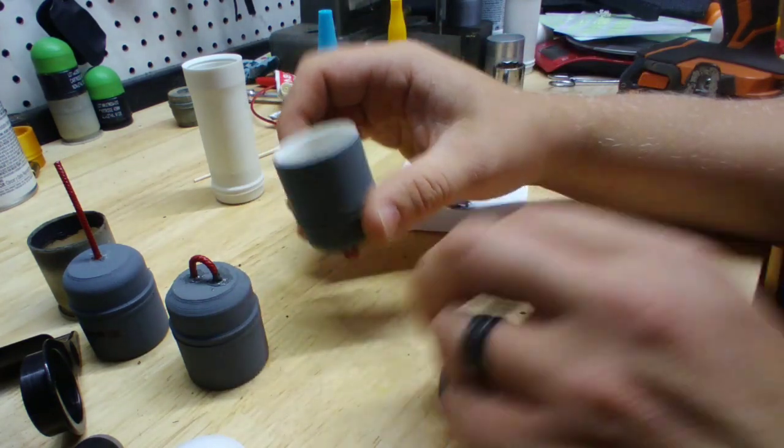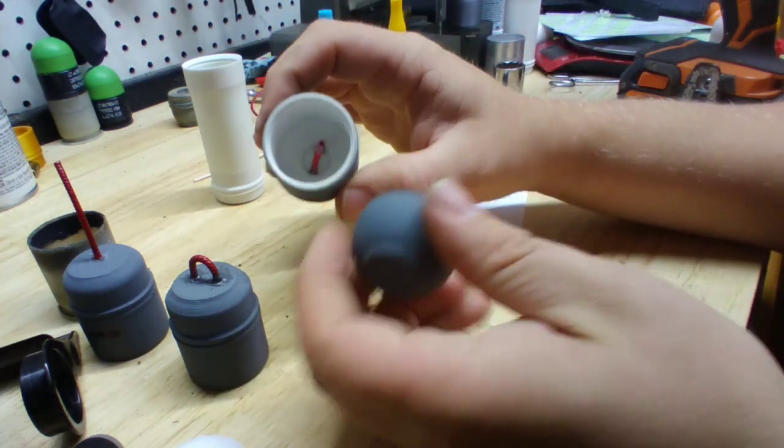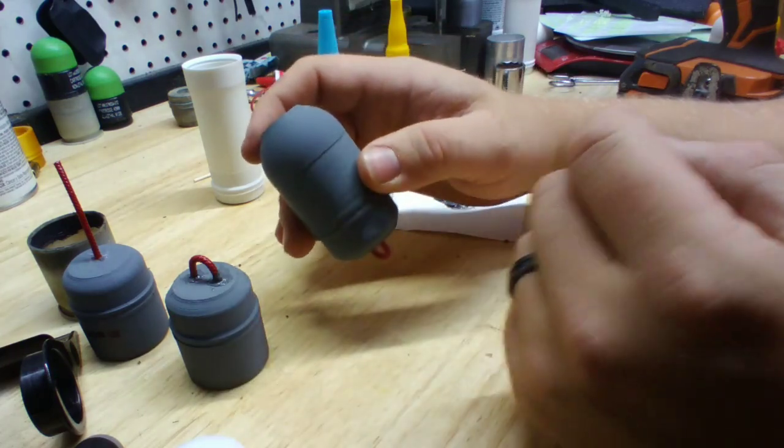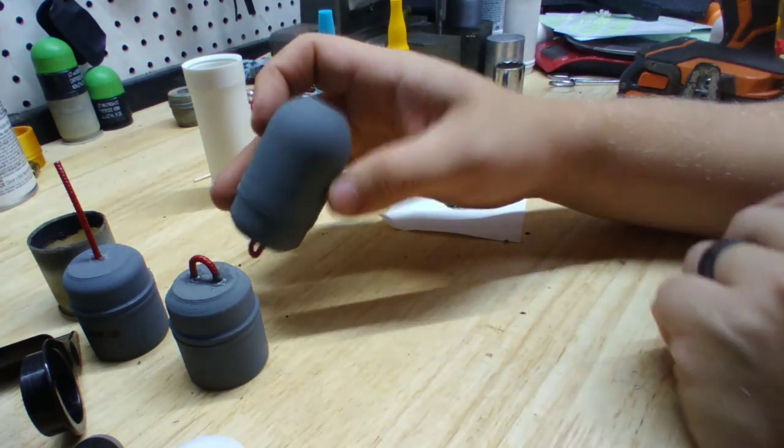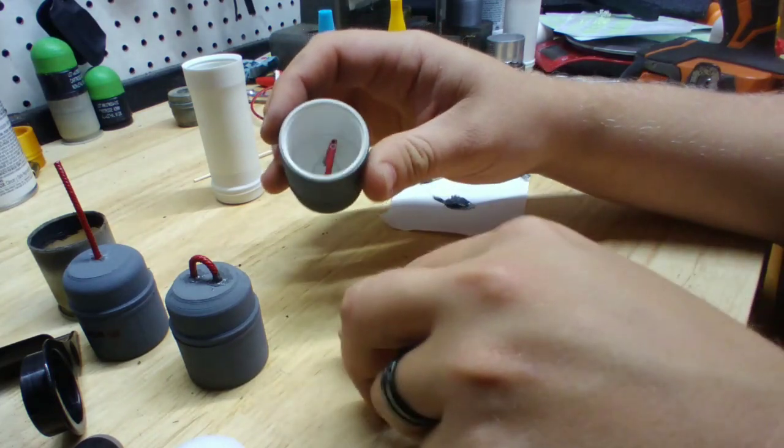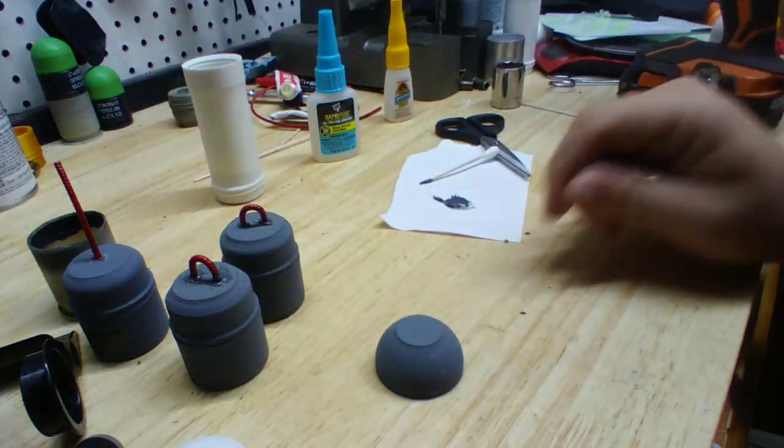After that, I'm just going to pour my smoke mix in, super glue the cap on, and then load it just as I would any other 40 millimeter shell. So we'll let those dry.